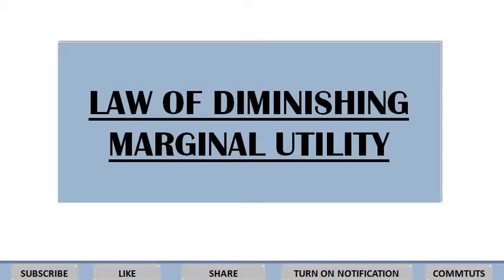Law of Diminishing Marginal Utility — 'diminishing' का मतलब होता है decrease, reduce, decline. Marginal utility means the change in total utility which occurs when a consumer consumes an extra unit of a commodity. Marginal utility को मैंने tutorial number nine में detail में समझाया है, उसका link description box में mention कर दूँगी। अब हम discuss करते हैं कि law of diminishing marginal utility होता क्या है।